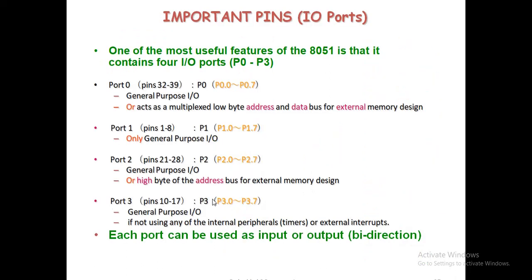Port 3 (P3.0 to P3.7) acts as general purpose I/O — simple input and output. You can connect input devices like sensors or switches, and output devices like LEDs, LCDs, DC motors, servo motors, and so on. However, if you are using internal peripherals like timers, counters, serial communication, or external interrupts, then you cannot use Port 3 as a standard I/O port. Each port can be used as input or output — that is why it is bidirectional.